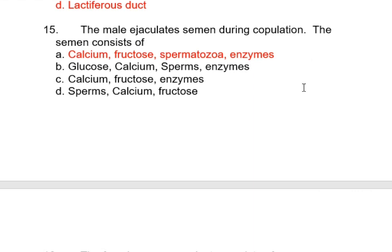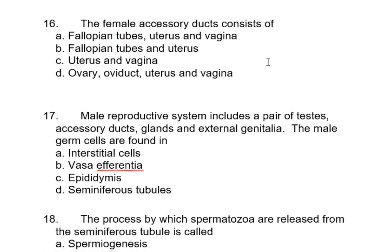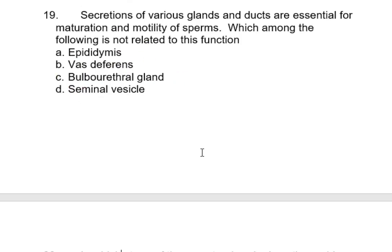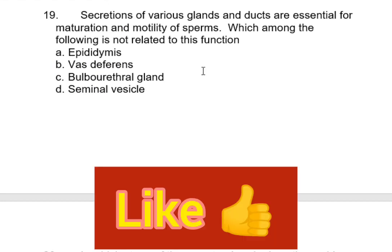The female accessory ducts consist of fallopian tubes, uterus, and vagina. The male reproductive system includes a pair of testes, accessory ducts, glands, and external genitalia. Spermatozoa are produced in seminiferous tubules. Which among the following is not related to the maturation and motility of sperms? The bulbourethral gland — its function is lubrication of the penis during copulation, not sperm maturation.